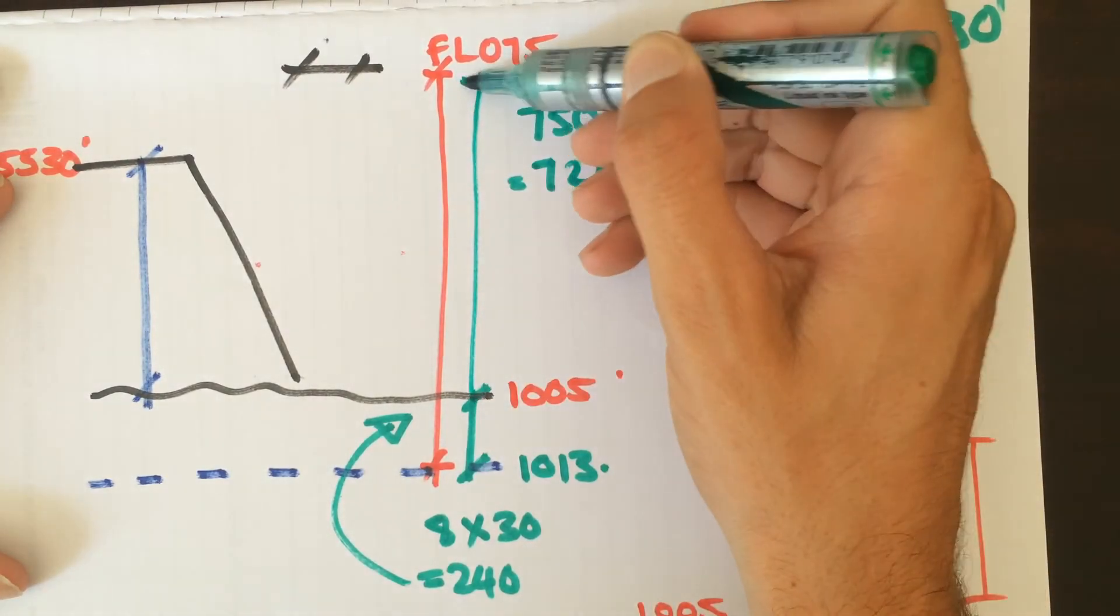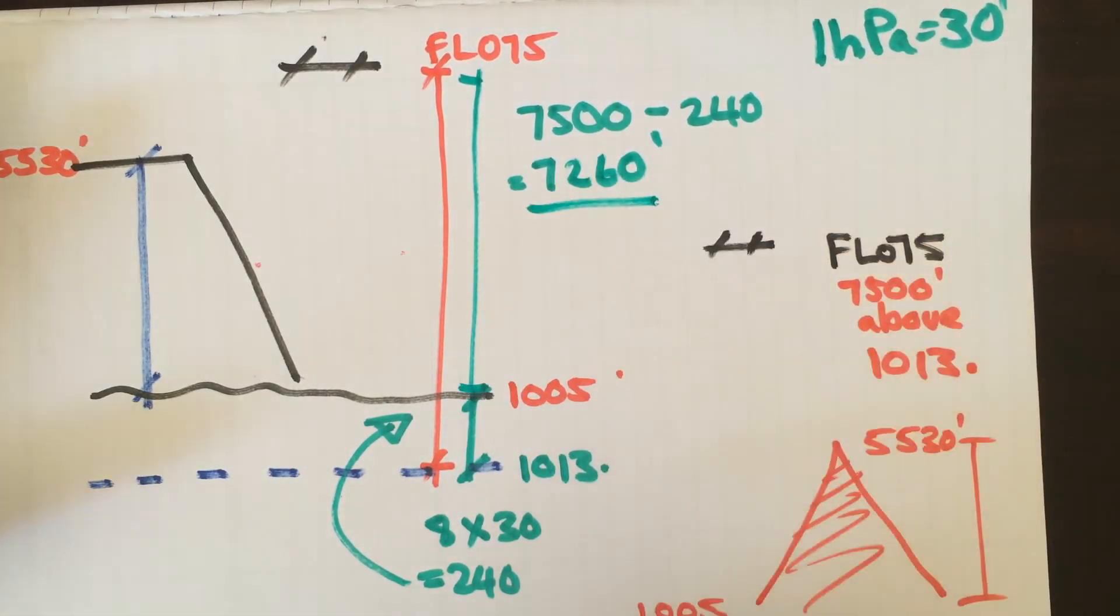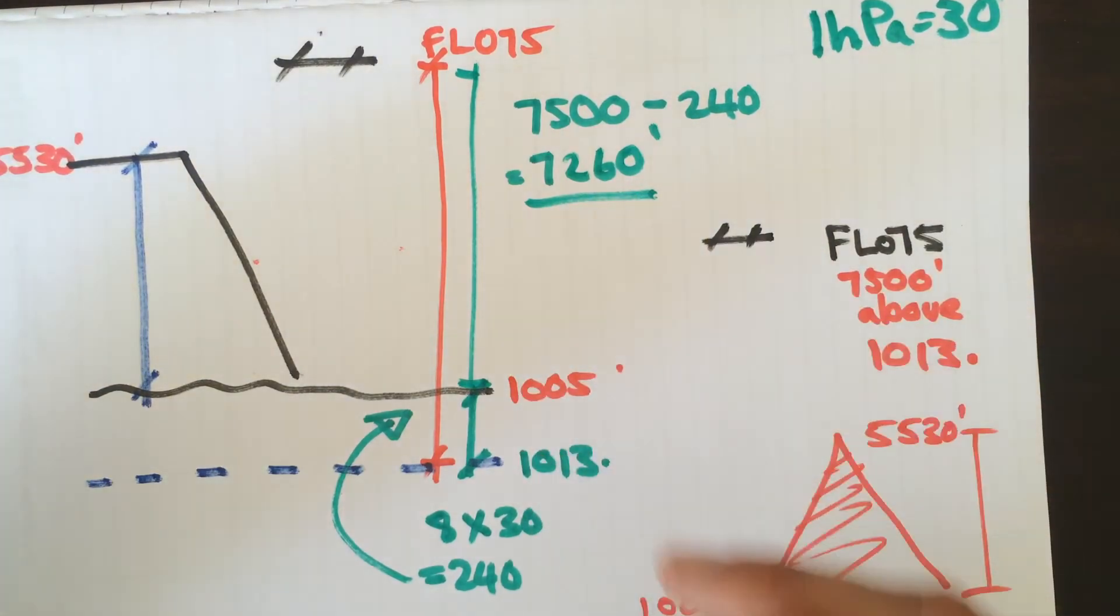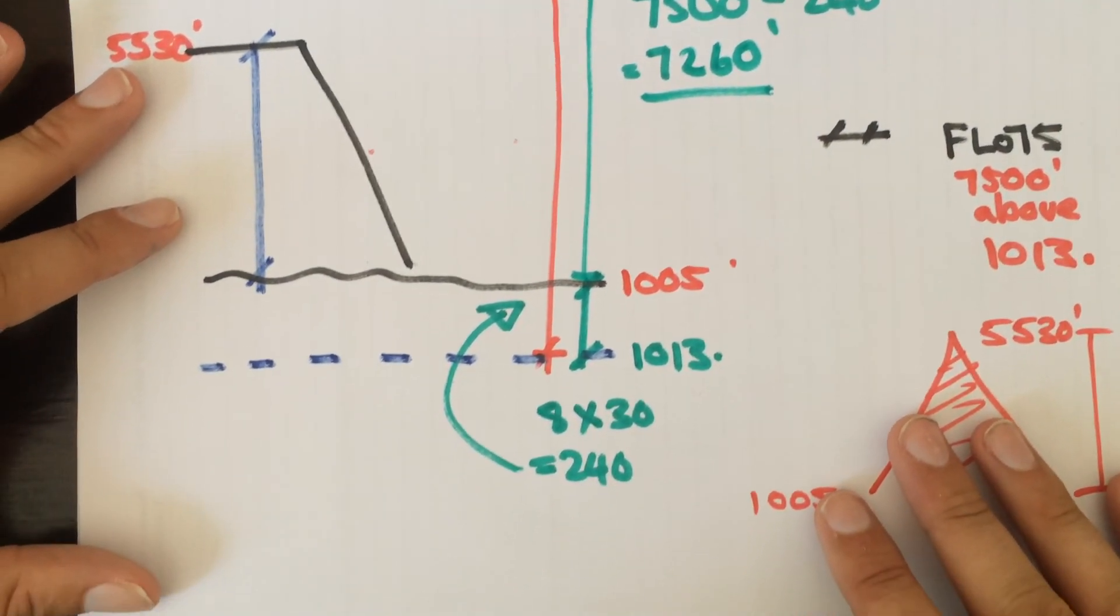And we get an answer of seven thousand two hundred and sixty feet. Cool. So we know now from here to there is seven thousand two hundred and sixty feet. All right, so now we can take this now and minus this, and then we'll get our answer. So I'm gonna move this up quickly.